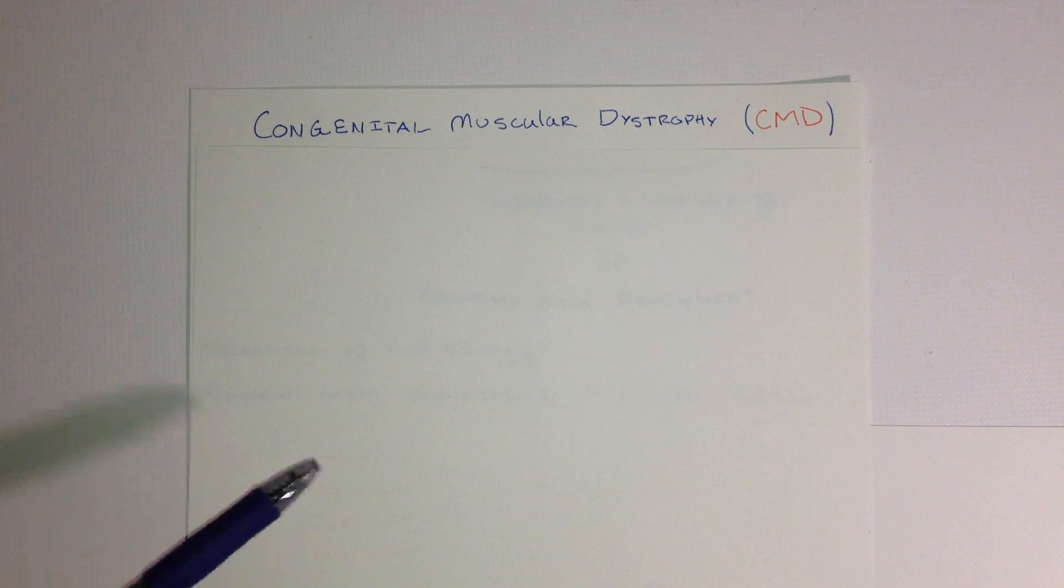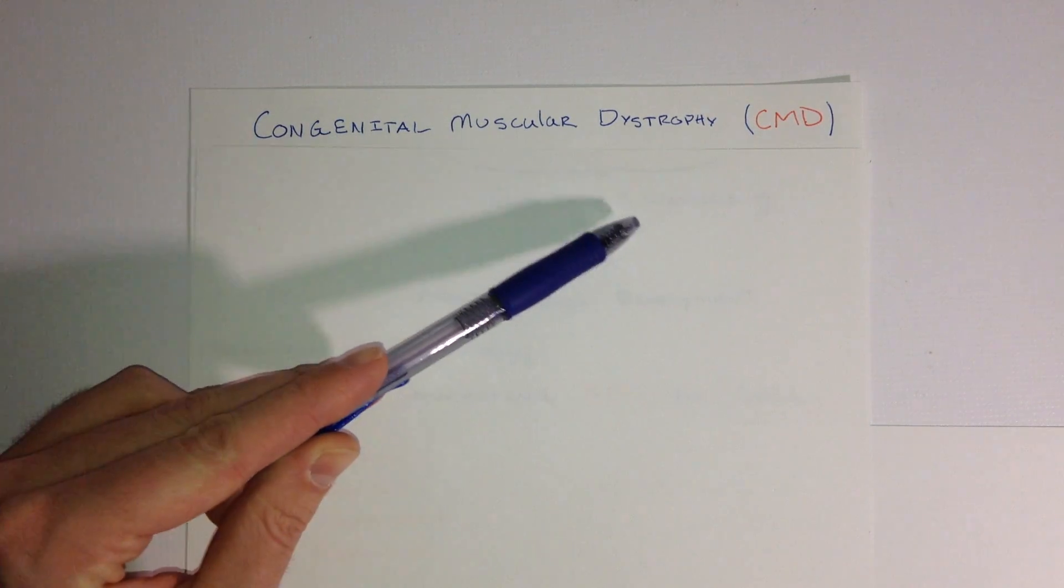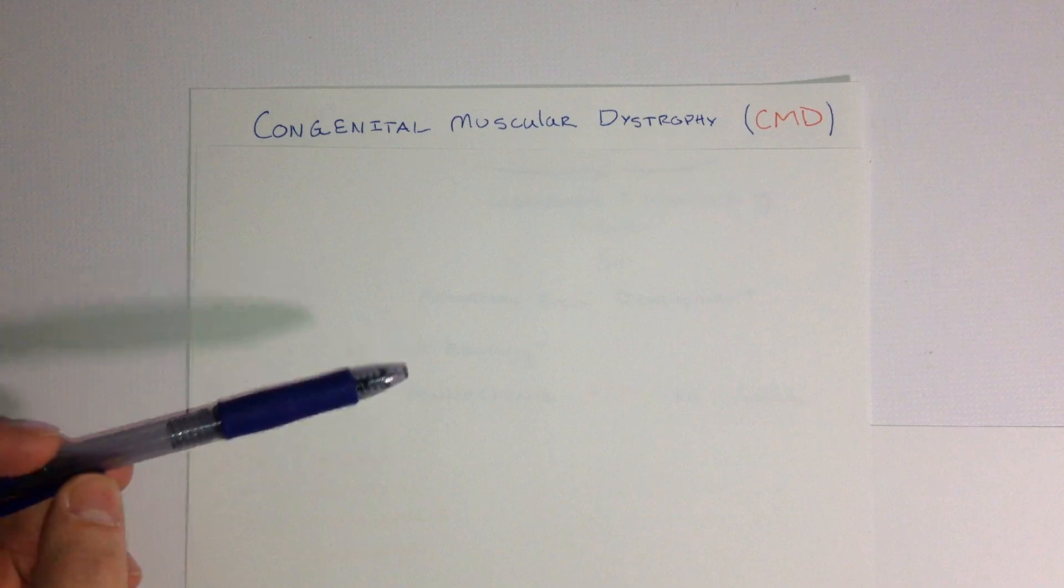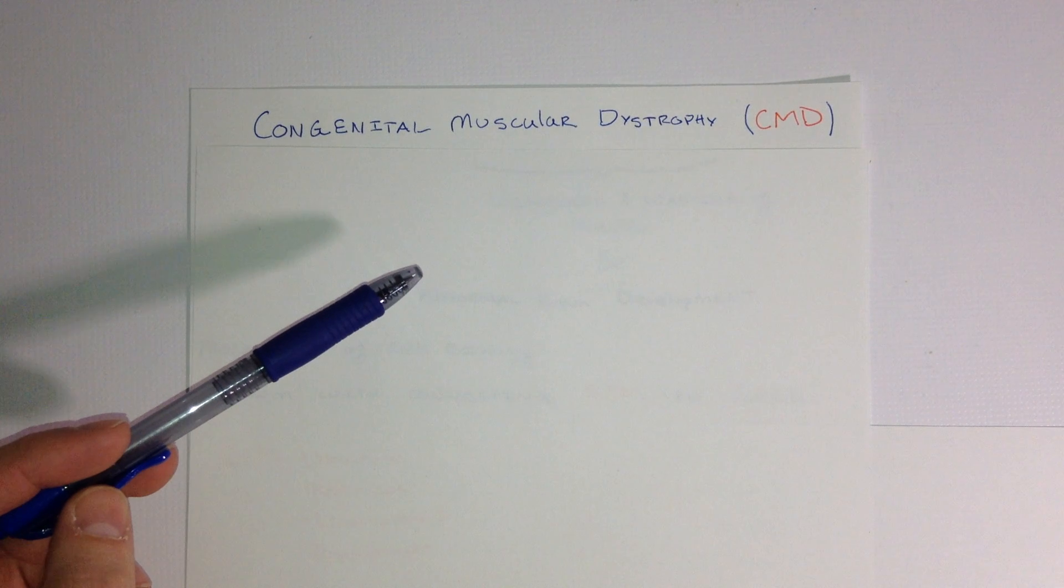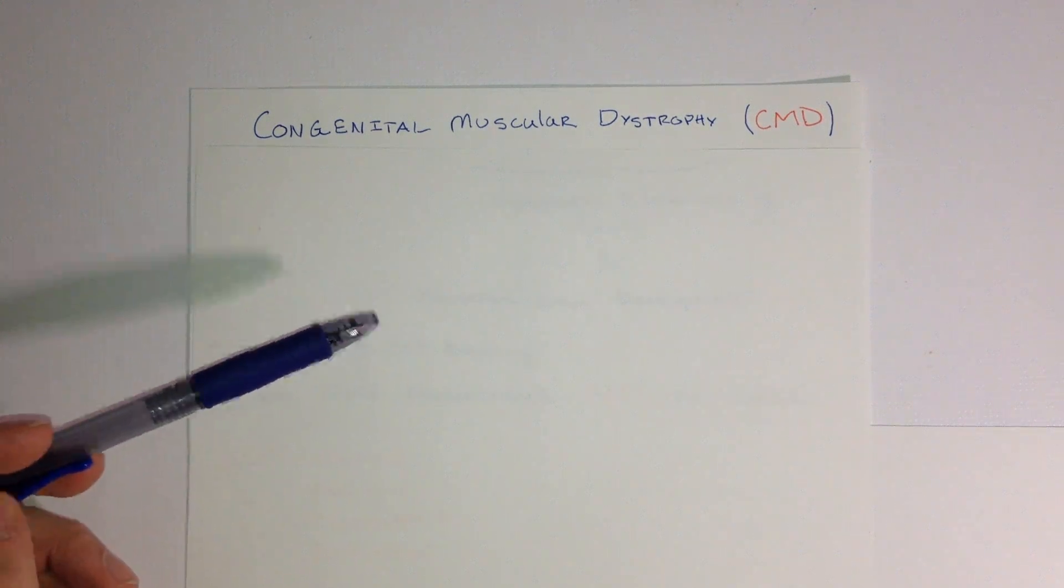Hello, in this video I will be discussing the biological mechanism behind congenital muscular dystrophy, or CMD for short. This is an autosomal recessive disorder, meaning that there is a mutation in the DNA sequence causing mutated enzymes.